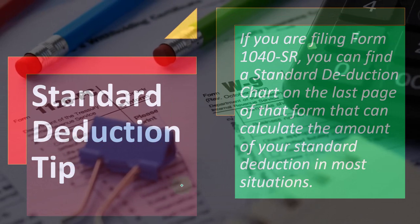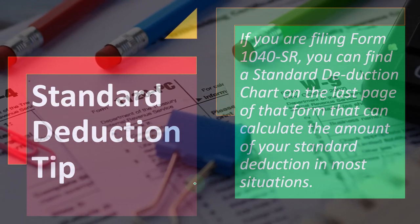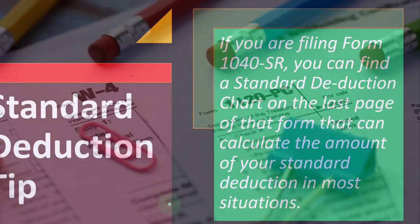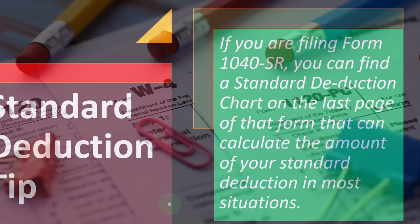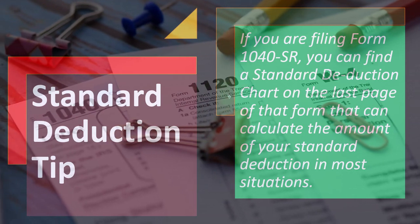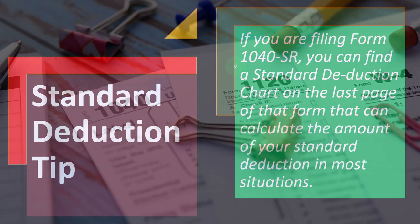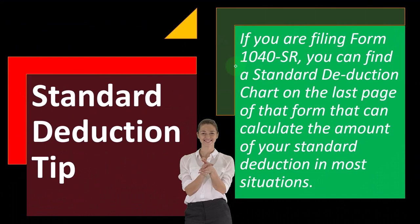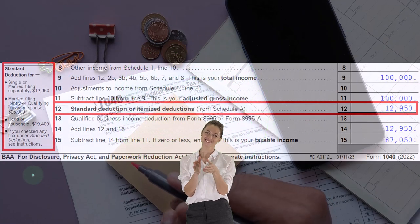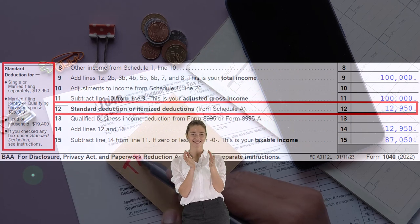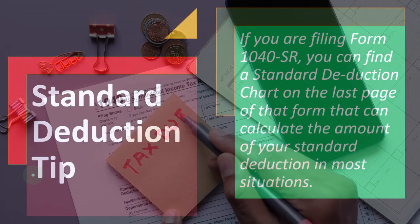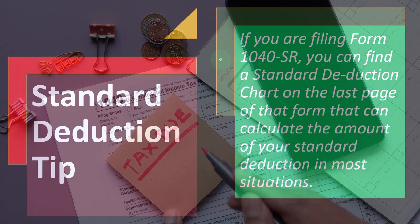Standard deduction tip: if you are filing Form 1040 SR, you can find a standard deduction chart at the last page of that form that can calculate the amount of your standard deduction in most situations. Tax software is often a useful component. Notice there are a couple of variations to the standard deduction in that box on the first page of Form 1040: if you're over a certain age, there could be an adjustment, and if you're blind, there could be other adjustments, often related to Form 1040 SR.